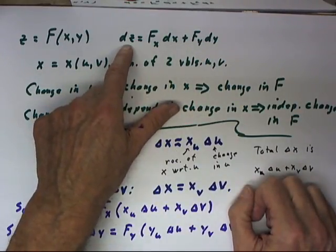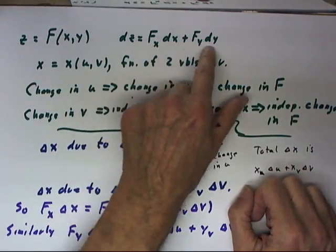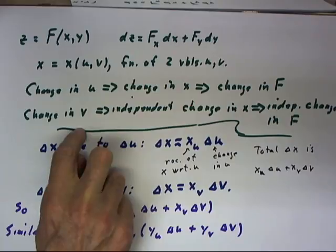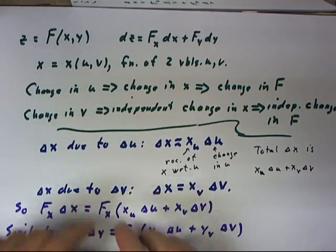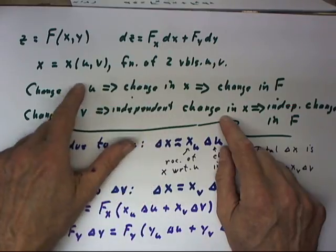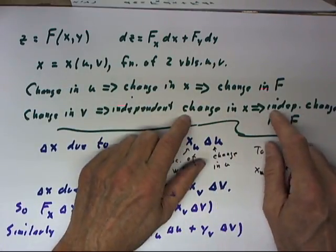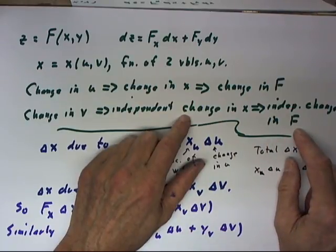This could be written df or dz. Change in the value of f according to this expression. A change in v implies an independent change in x. That is, a change in x is independent of whatever happened as a result of u, and that implies an independent change in the value of f.